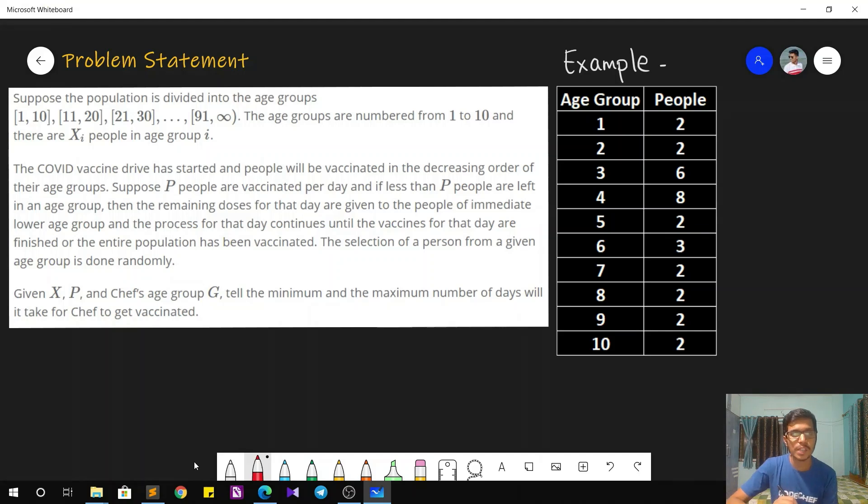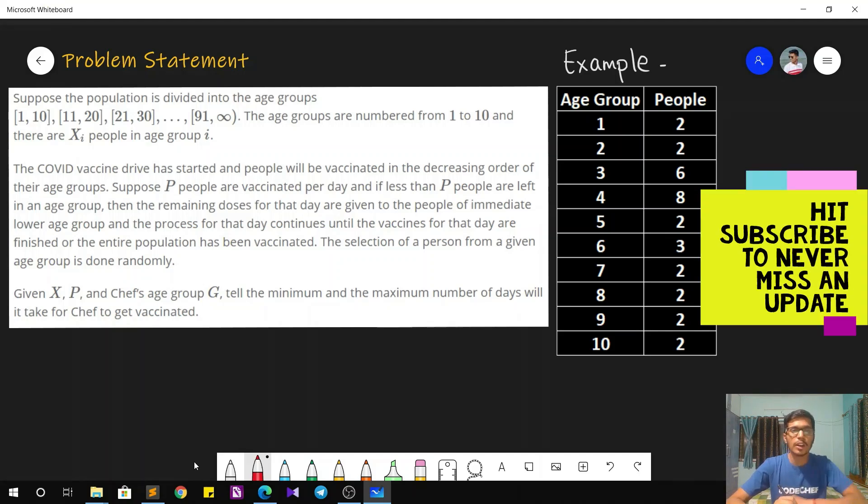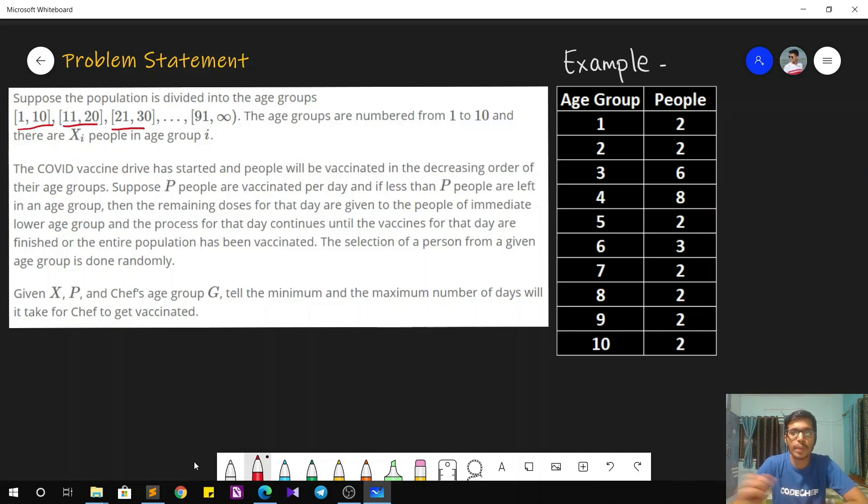The problem statement goes as follows. We are given a population such that it is divided into 10 groups, i.e. from age 1 to 10, 11 to 20, 21 to 30 and so on. So total of 10 groups are present and the age groups are numbered from 1 to 10. And the data of how many people are present in each age group is given to us in the form of an array.